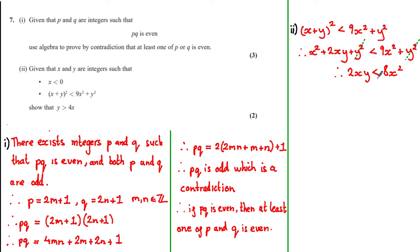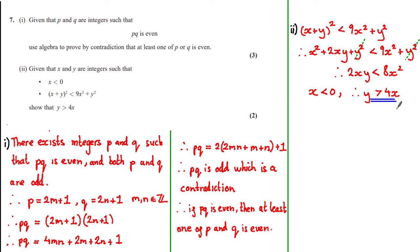When we divide or multiply both sides of an inequality by a negative number, we must reverse the inequality sign. So we tell the examiner: since x is strictly less than 0, dividing both sides by 2x gives y is strictly greater than 4x. The only way to get full marks was to clearly show that since x < 0, the inequality sign reverses and we obtain y > 4x.